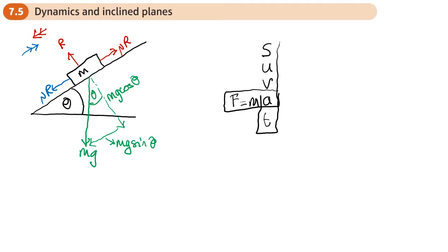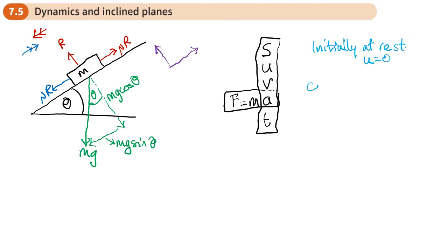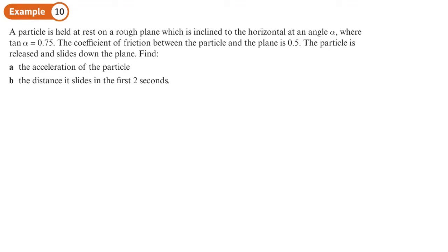You'd look at the forces along the slope — the unbalanced forces — to work out the resultant force, and from that find the acceleration. Then once you have the acceleration you can use SUVAT. Look out for key phrases: 'initially at rest' tells you u = 0, and 'comes to rest' tells you v = 0.